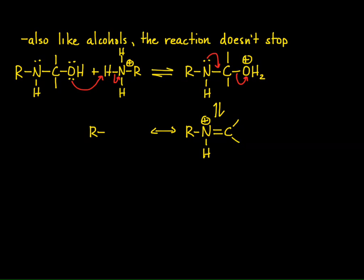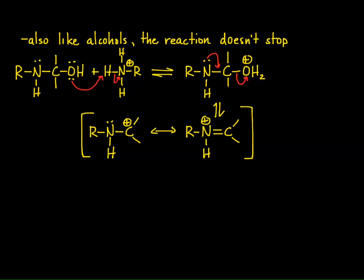The iminium ion has a resonance structure where, if I take the pi electrons from the nitrogen-carbon bond and place them onto the nitrogen, the carbon has a positive charge. In the resonance structure on the left-hand side, the positive charge resides on the most electropositive atom. On the resonance structure on the right, all of the atoms have an octet of electrons. So the right is the major resonance contributor, but we're going to have some carbocation character — and this will become important later on.